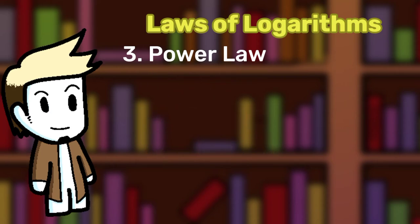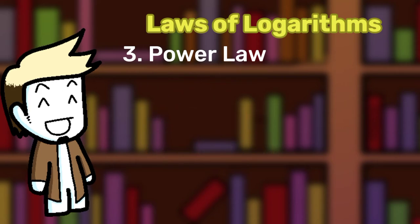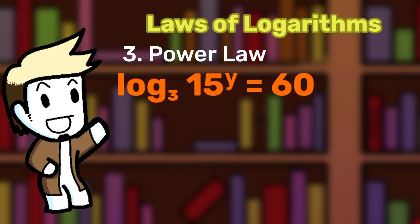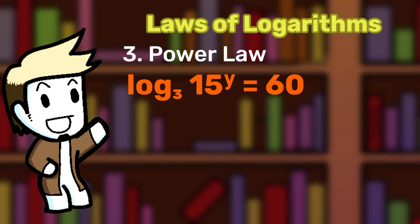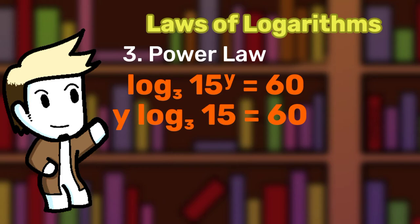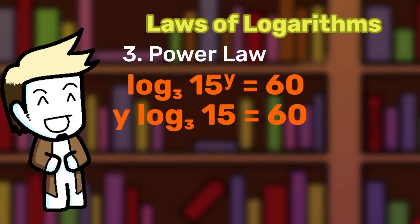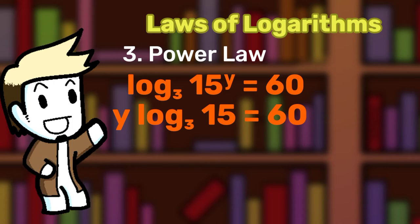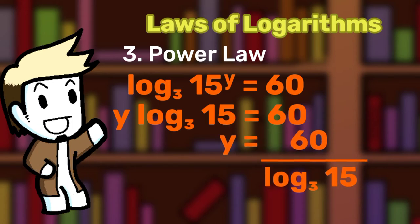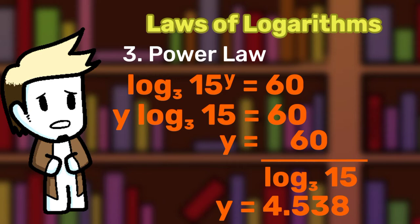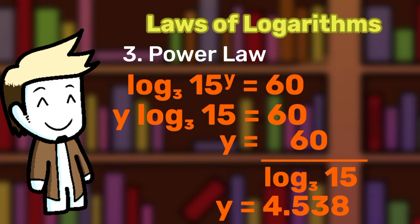Let me give you another example to help you understand this better. Say we have an equation: log base 3 of 15 to the power of Y equals 60. Because of the power law, we can move the Y. Now, we say this is Y times log base 3 of 15 equals 60. Thus, to find the value of Y, we can just easily move the log to the right hand side. However, if your calculator cannot calculate logs with bases other than 10, you can use the next rule to overcome this issue.